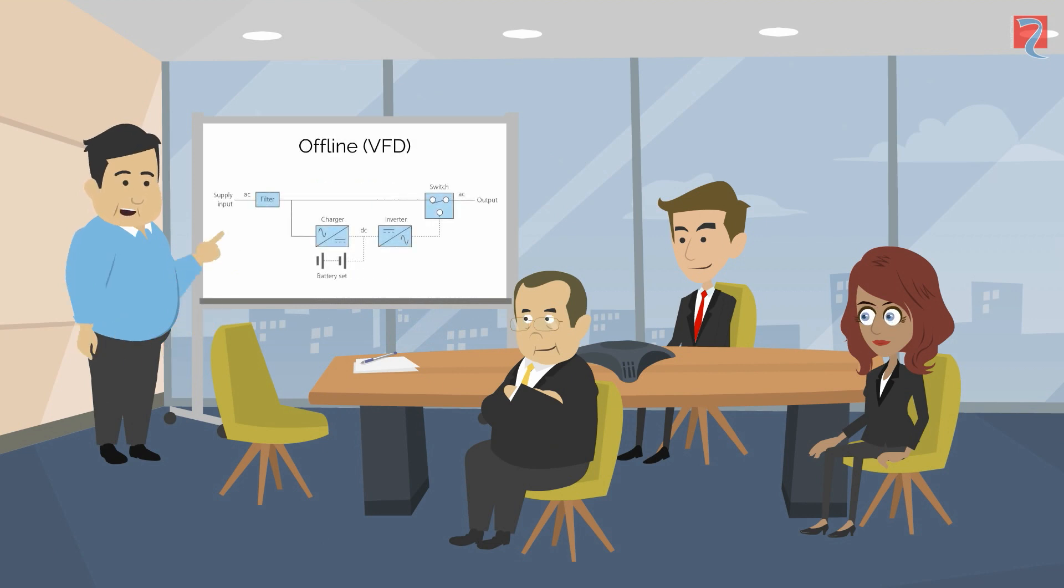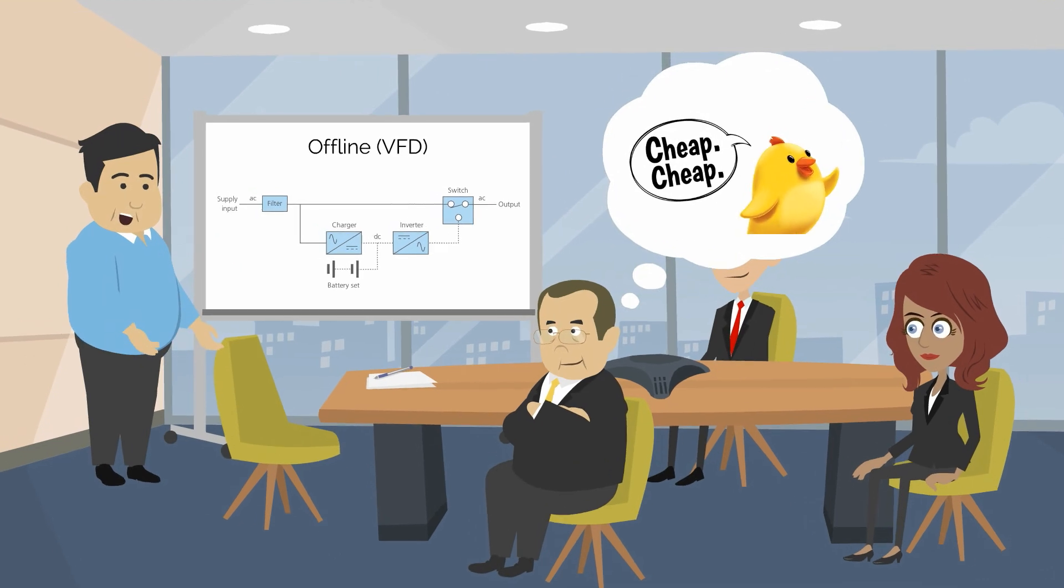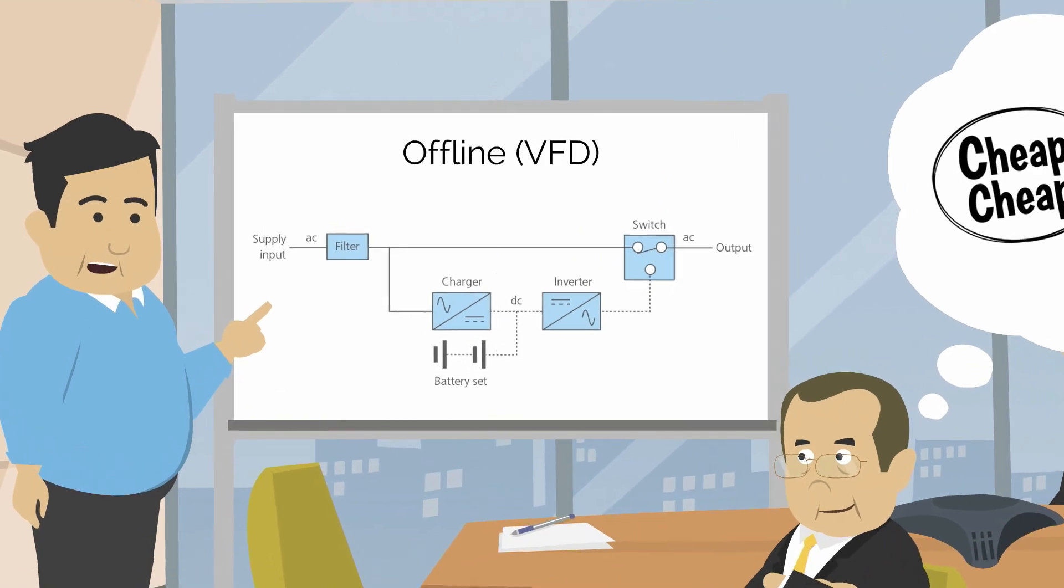The most basic and cheapest UPS is known as an offline or voltage and frequency dependent type. An offline UPS is the most cost-effective way of providing protection against power outages.